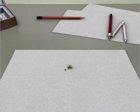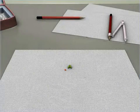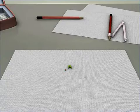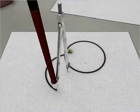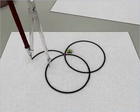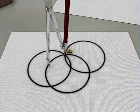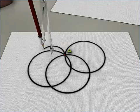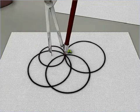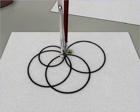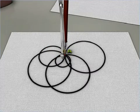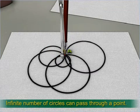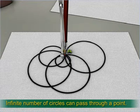Consider a point A. Many circles can pass through this point. Thus, we can generalize that infinite number of circles can pass through a point.